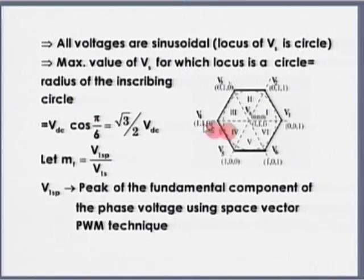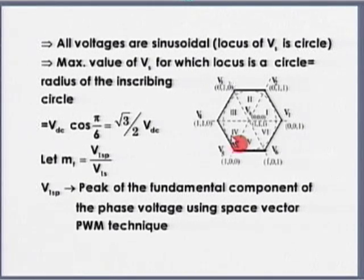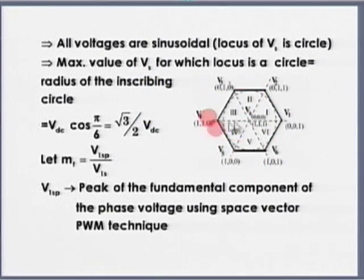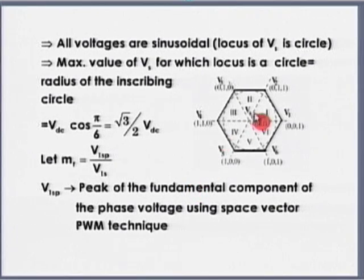Without going into more details of space vector PWM, there are finer issues: what is the maximum value of Vs for which the output voltages are sinusoidal? I know the condition: if the output voltages are sinusoidal, the locus of Vs is a circle — that is the radius of the inscribed circle of the hexagon. I can determine the maximum value of Vs for which the output voltages are sinusoidal. More details can be found in the literature.